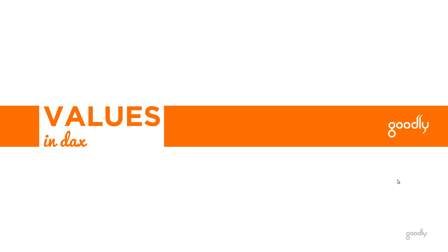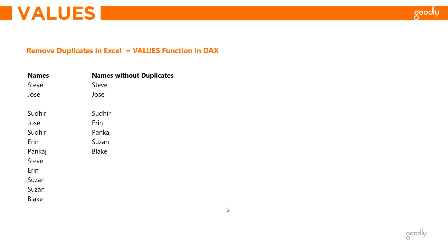Hi, here with Chandipa at Goodly once again. In this video we're going to take a look at the VALUES function in DAX. The VALUES function is equivalent to the remove duplicates feature in Excel. We have a list of names here with some duplicates, and what we'd like to get is a table with a single column where the duplicates are removed — that is exactly what the VALUES function does in DAX.